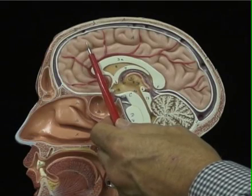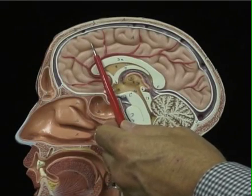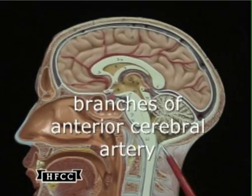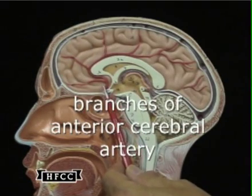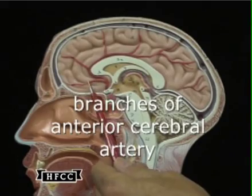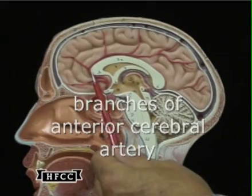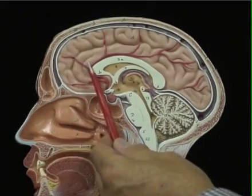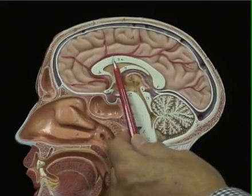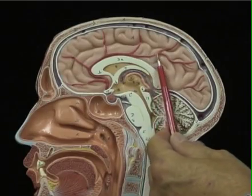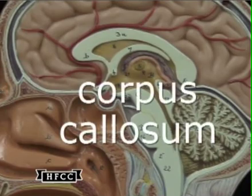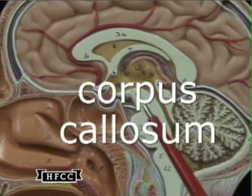Those are multipolar neurons that are unprotected. Then the blood supply — the one shown here are the many branches of the anterior cerebral artery that comes off the circle of Willis at the base of the brain.